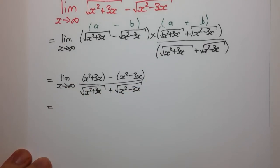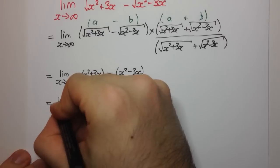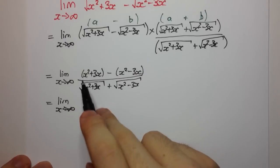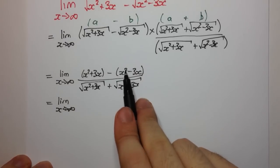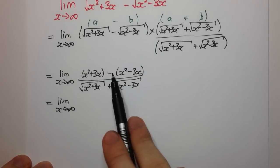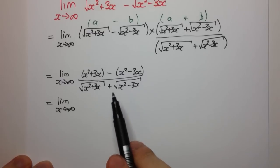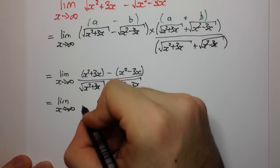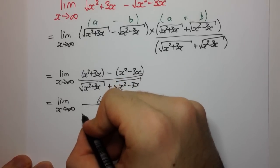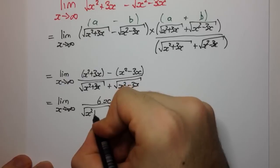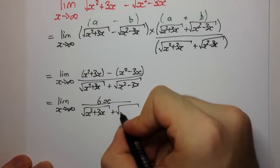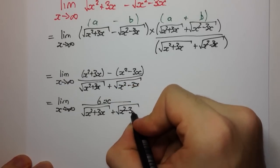Let's go ahead and simplify what we have in the numerator. We have x squared minus x squared, which is 0, and we have 3x minus minus 3x, so it's going to be plus, giving us 6x. This is divided by the square root of x squared plus 3x plus the square root of x squared minus 3x.